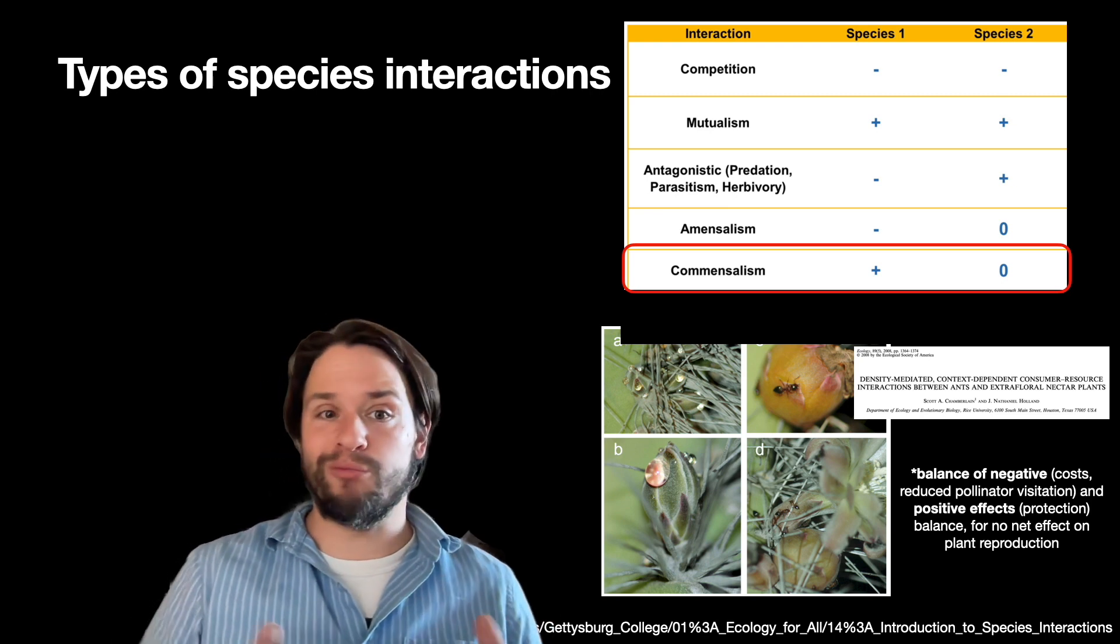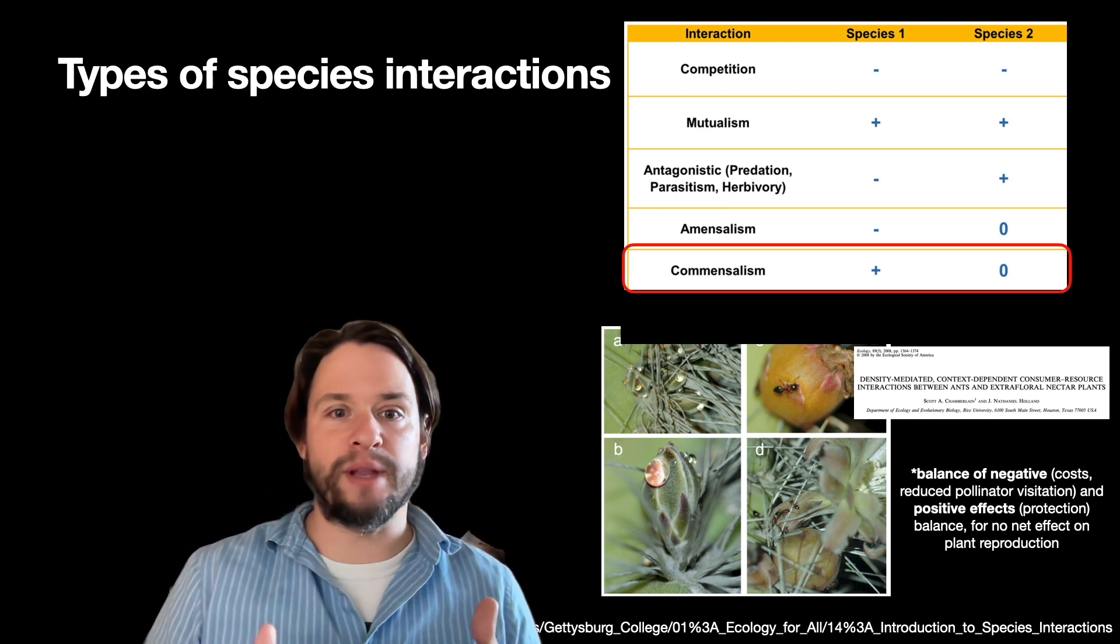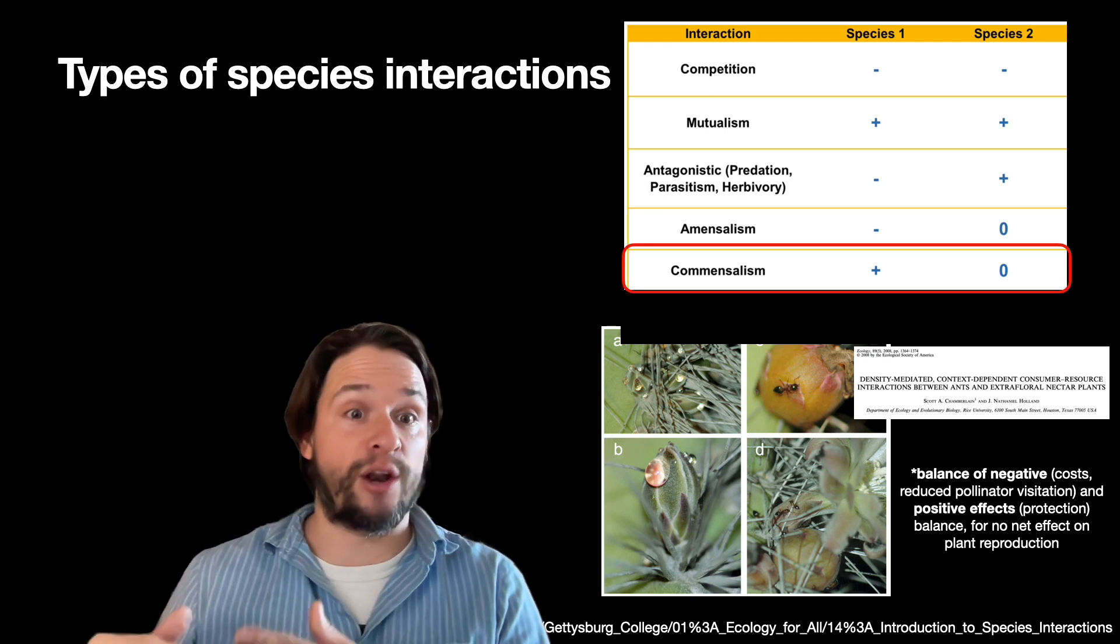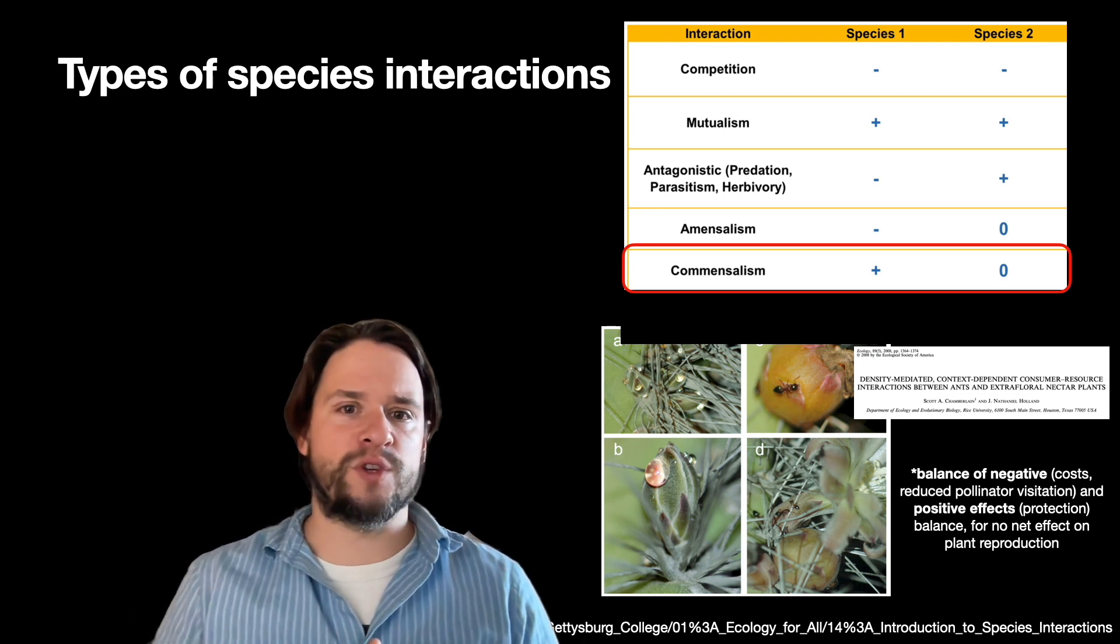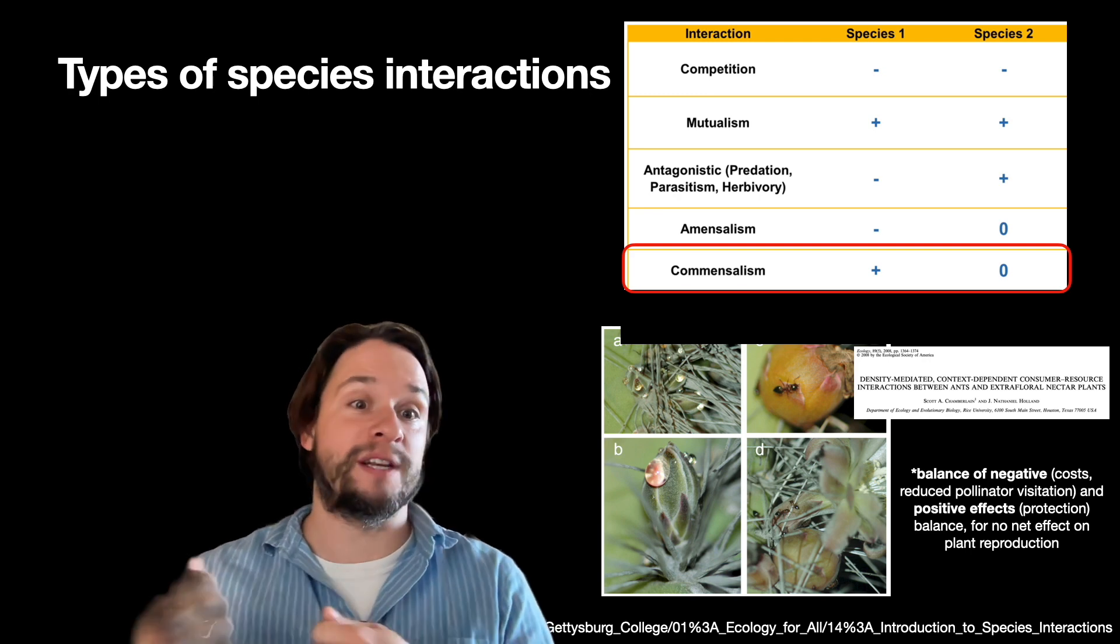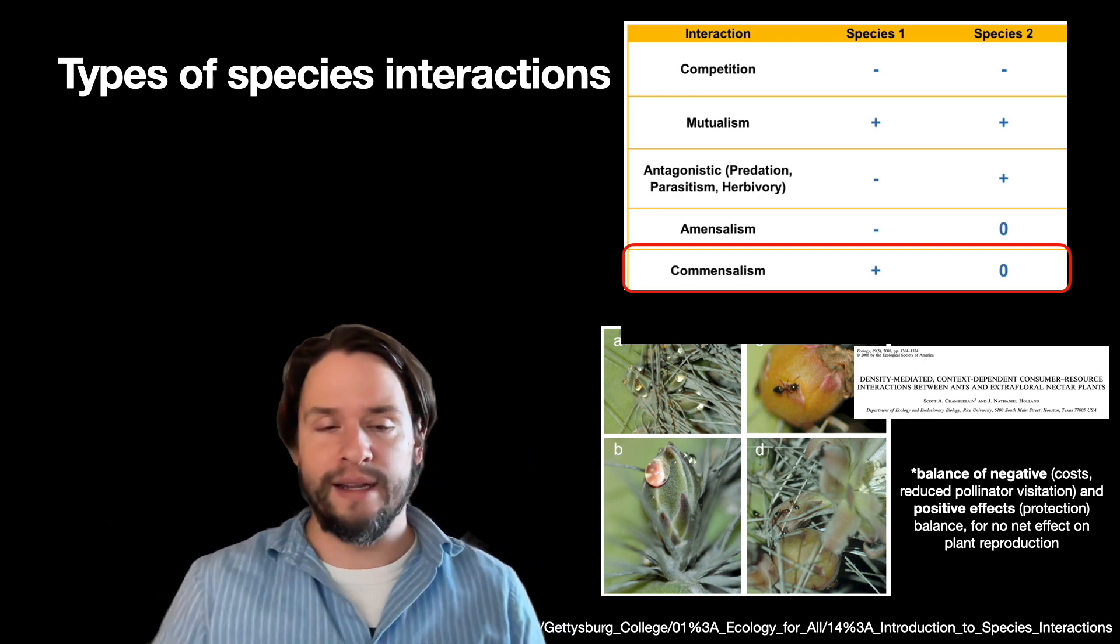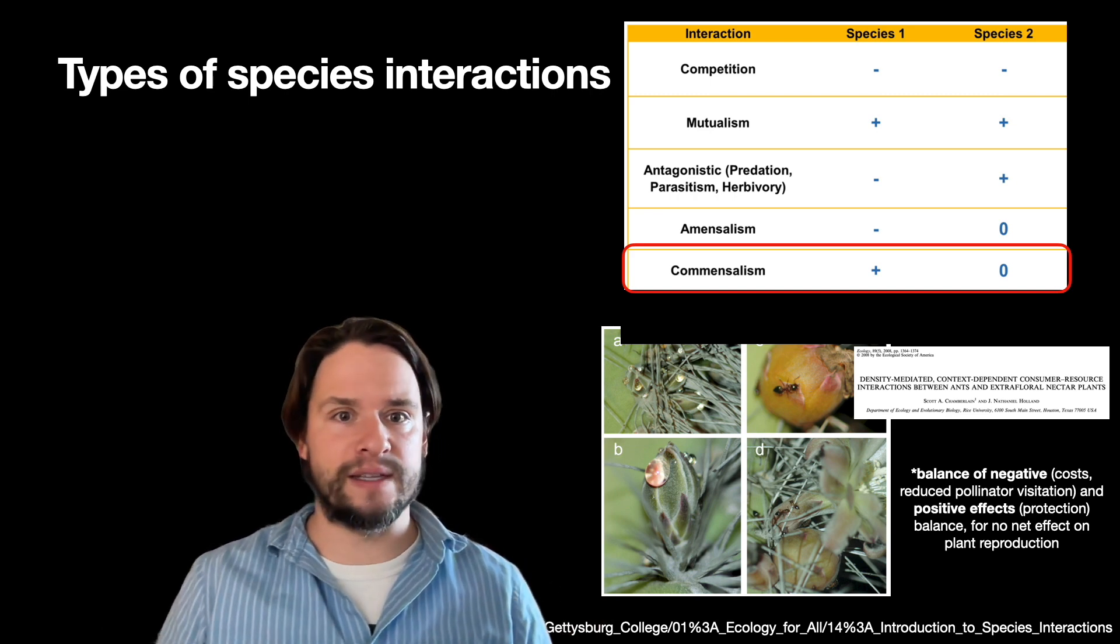But the ants on the other hand are definitely getting a benefit—they are getting food, a house. And so this sort of asymmetric relationship that is positive for one partner but neutral for the other, that's commensalism.